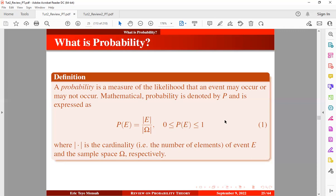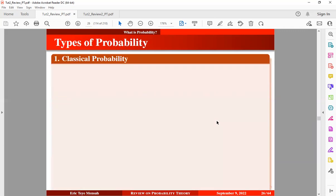All right, now we have three types of probability. This is just the general definition for probability. Let's quickly look at the types of probability. We have the classical probability. What is classical probability?